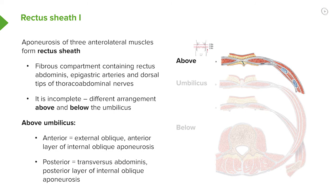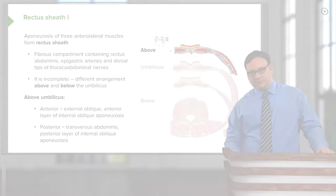Effectively, we'd have one and a half anteriorly and one and a half posteriorly, where the two halves have come from internal oblique dividing. Then, most posterior, we have a fine layer called transversalis fascia, and then we have the peritoneum. We'll explore those in later lectures.